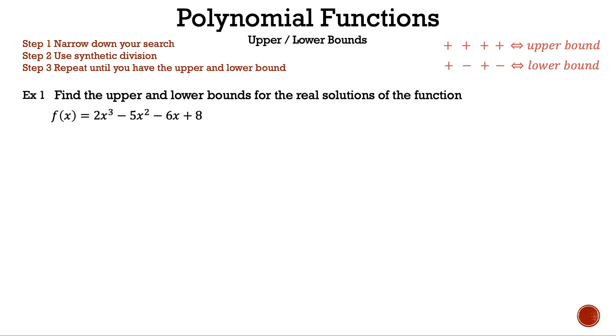Now let's read the question. Find the upper and lower bounds for the real solutions of the function f(x) = 2x³ - 5x² - 6x + 8.